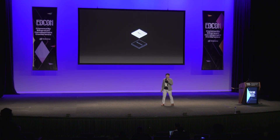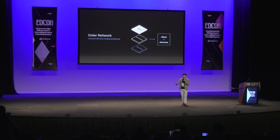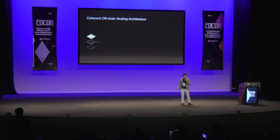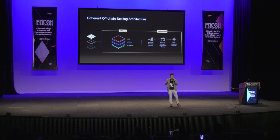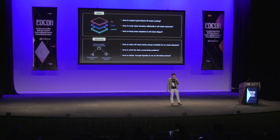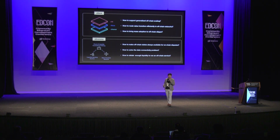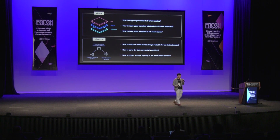So what is Celer Network? Celer Network is a layer 2 scaling architecture — I bet everyone knows sort of what layer 2 is. But Celer Network is proposing a coherent off-chain scaling architecture with both a technology stack and also a crypto-economic stack on layer 2. On the technology front, we proposed a layered structure with the lowest layer called C-channel, which solves the problem of supporting generalized off-chain scaling for not only just payments, but also arbitrary smart contracts.